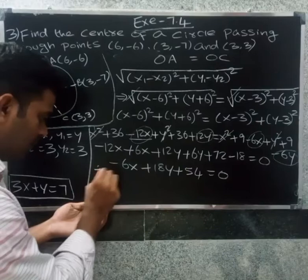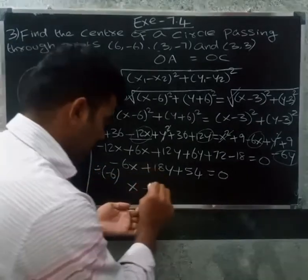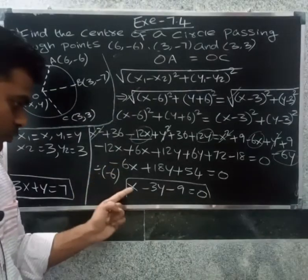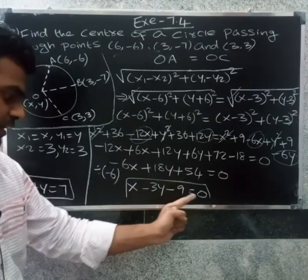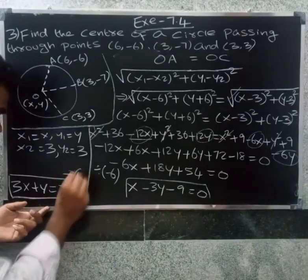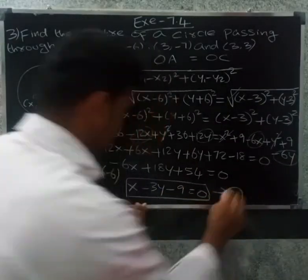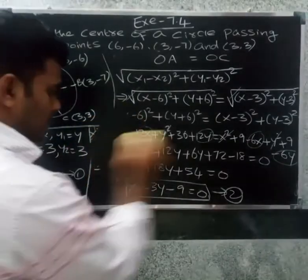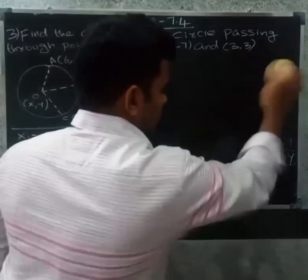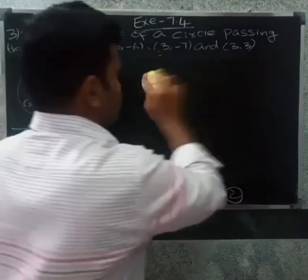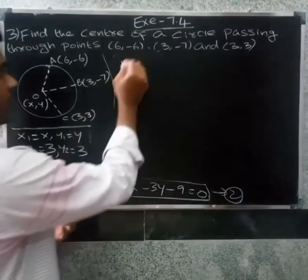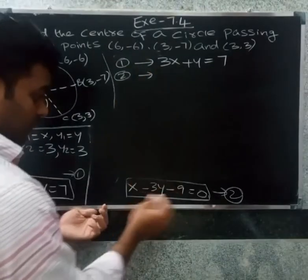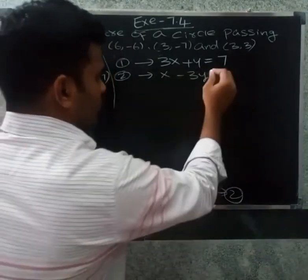Dividing by minus 6: x minus 3y minus 9 equal to 0. This is the second equation from OA equal to OC: x minus 3y minus 9 equal to 0, or x minus 3y equal to 9.